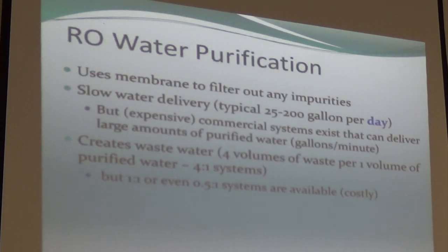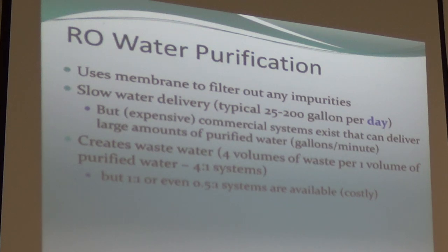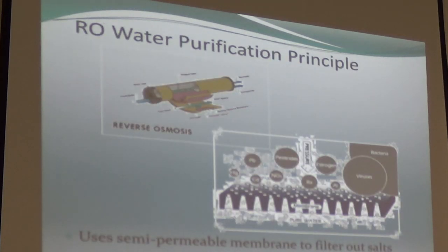With reverse osmosis, the process uses a membrane for the water to go through, removing all the minerals — both ions as well as non-charged particles. The problem with reverse osmosis is it tends to be slow. You either collect it in a pressure tank or in an open reservoir, and it does create what the industry calls waste water, though we'll talk about that. The membrane eventually wears out.